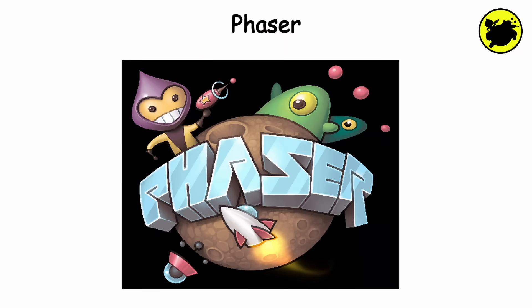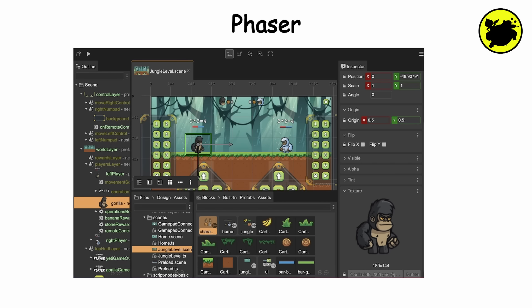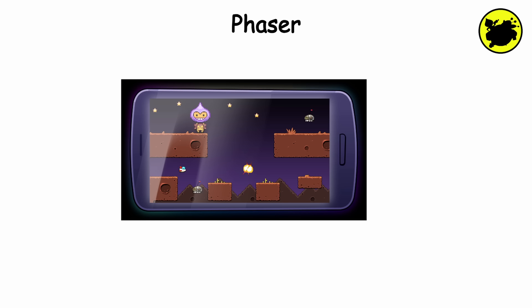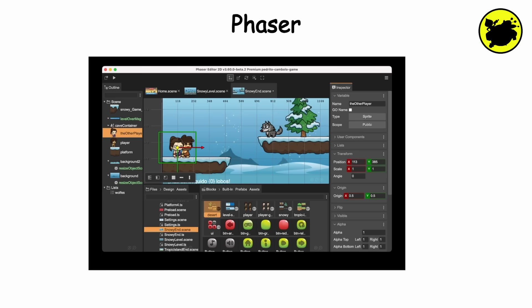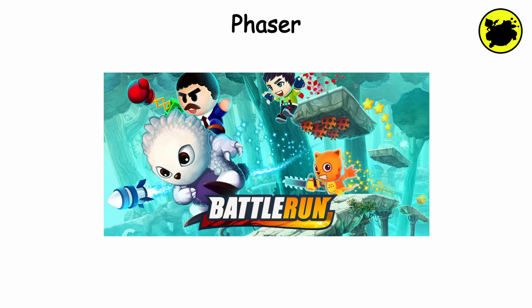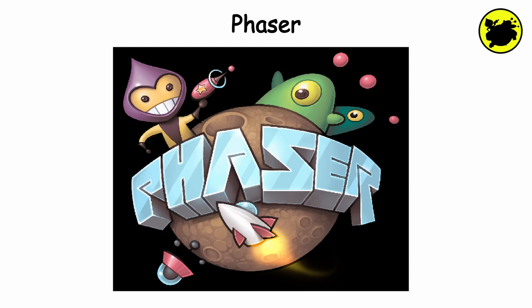Phaser is a free, open-source framework for creating HTML5 games. It is known for its flexibility and ease of use, allowing developers to quickly prototype and build 2D games for web browsers and mobile devices. Phaser utilizes JavaScript and offers a wide range of features, including sprite animations, physics simulation, and input handling. Notable games created with Phaser include HexGL and BattleRun. With its active community and extensive documentation, Phaser is a popular choice for devs and hobbyists looking to create browser-based games.